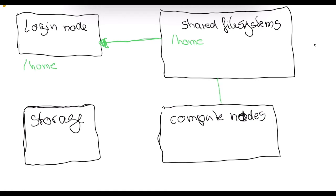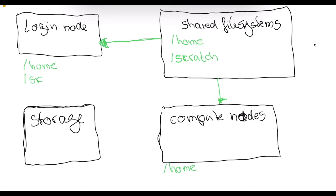The shared file system will also share out the home directory to the compute nodes, so when users are running calculations on the compute nodes, those nodes also see the home directory. Another file system that is also shared out is called Scratch, and that is a very common naming convention on most clusters. Scratch is shared out to the login node and also to the compute nodes.